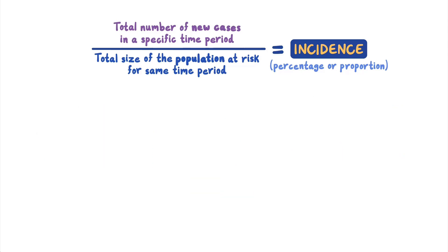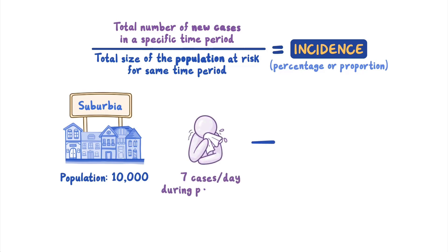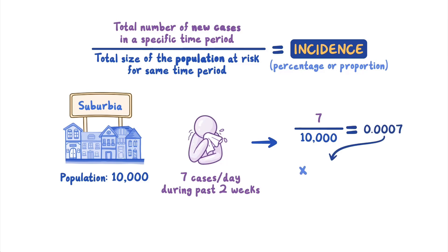In nearby Suburbia, with a population of 10,000 people, an average of only 7 cases were reported each day during the same two weeks. But that gives a daily incidence of 70 per 100,000, which is five times higher than the Metropolis incidence.